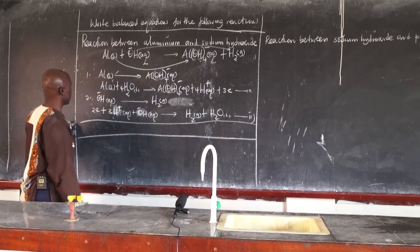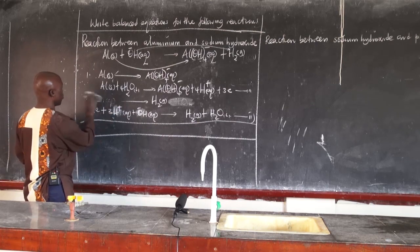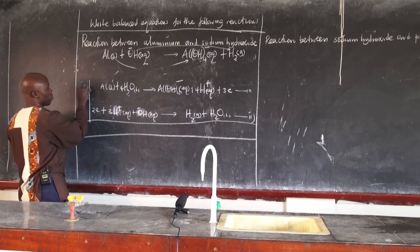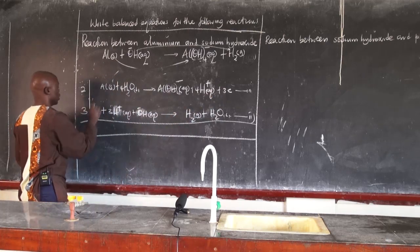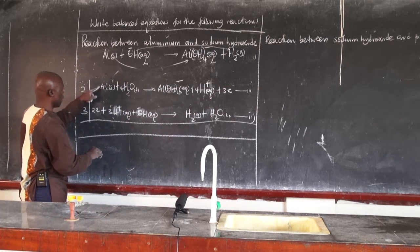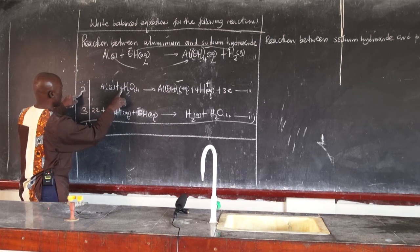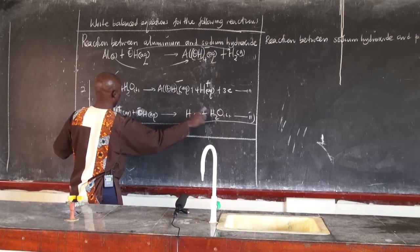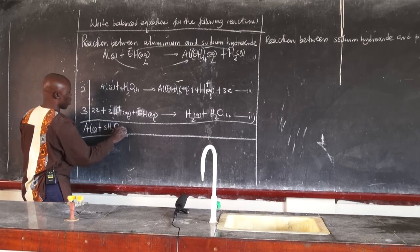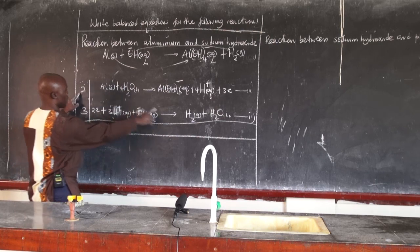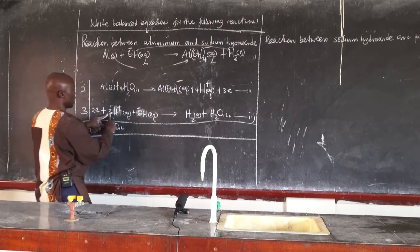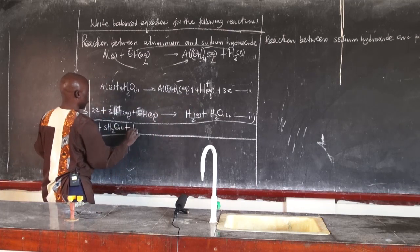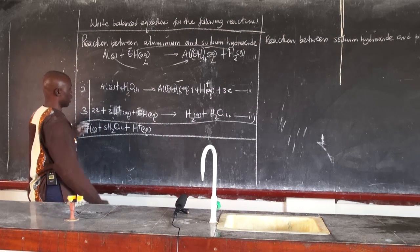I'll multiply this by two and this by three to eliminate electrons. So this is six electrons with six electrons, and electrons will disappear. I'll get two aluminum here, plus - here there are eight water molecules minus three - that is five water molecules, plus hydrogen ions. Hydrogen atoms: this is nine and these are about eight, so I subtract. Nine minus eight gives me one hydrogen ion. Then OH ions: I have three, so three OH minus gives me two aluminate ions plus three hydrogen gas.